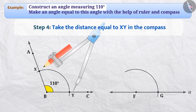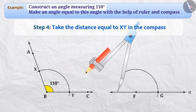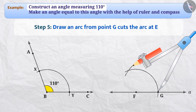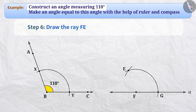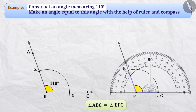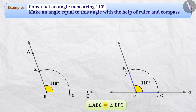Step 4: Now, we will take the distance equal to XY in the compass. Step 5: With this distance, we will place the pointed end of the compass at point G and draw another arc which will cut the previous arc at point E. Step 6: After this, we will join points F and E and create a ray named FE. Now, we have got angle EFG which is equal to angle ABC. If we place the protractor at angle F, we will see that the measurement of angle EFG is also 110 degrees. This verifies that angle EFG created is equal to angle ABC.